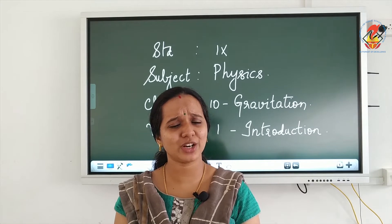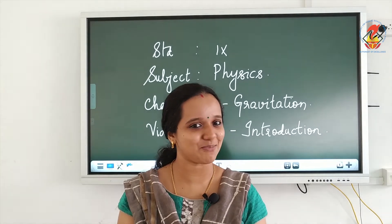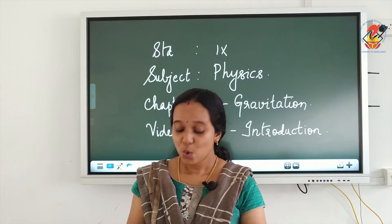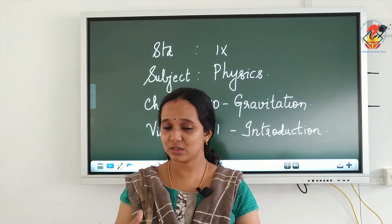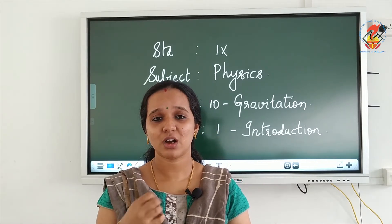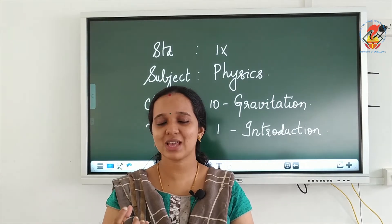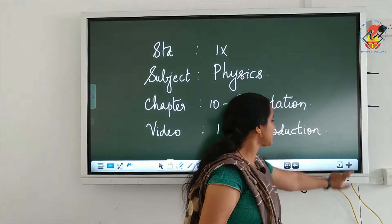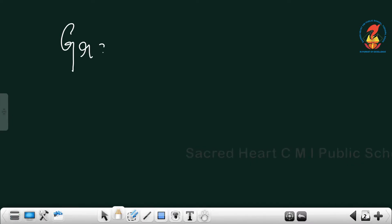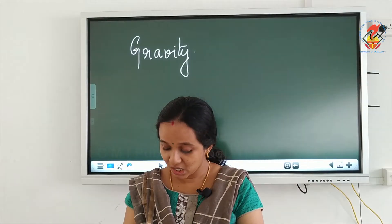When we hear the word gravitation, what comes first to our mind is Isaac Newton and the apple. When an apple fell on Newton's head, he figured out that the earth exerts a force on objects near its surface. The force exerted by the earth on objects is called gravity, and this gravity is what brings things down towards the earth.